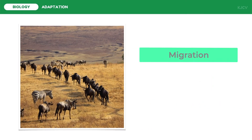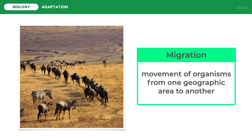Lastly, migration is the movement of organisms from one geographic area to another. This is found in all major animal groups including birds, mammals, fish, reptiles, amphibians, insects, and crustaceans. Animal groups usually migrate to find water, food, or habitat for mating. There are more behavioral adaptations in organisms, and all of them are essential for the survival of organisms.